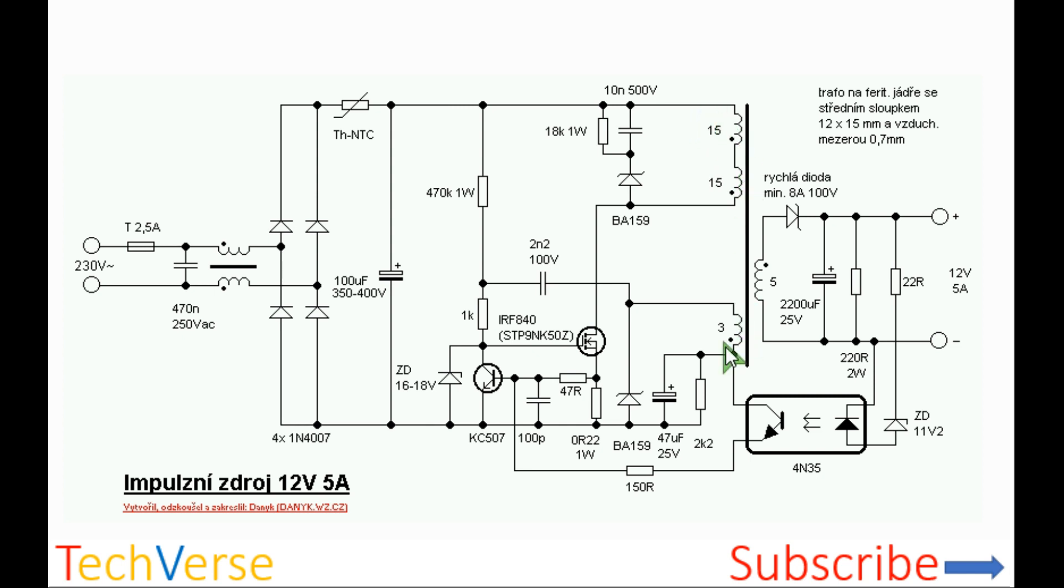More voltage will be induced in the auxiliary winding, which will find its way to the gate of the MOSFET through this 2nF capacitor. The MOSFET will remain completely on until the capacitor completely discharges.